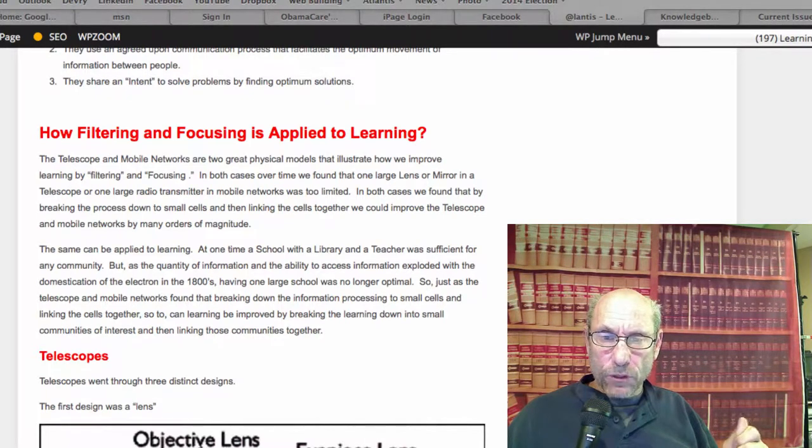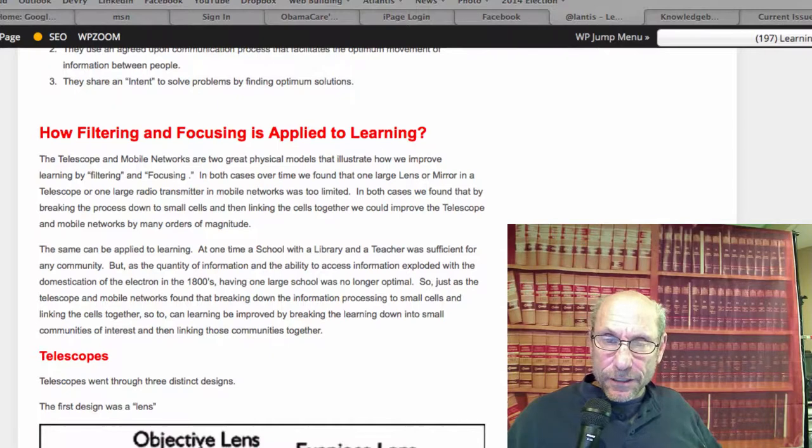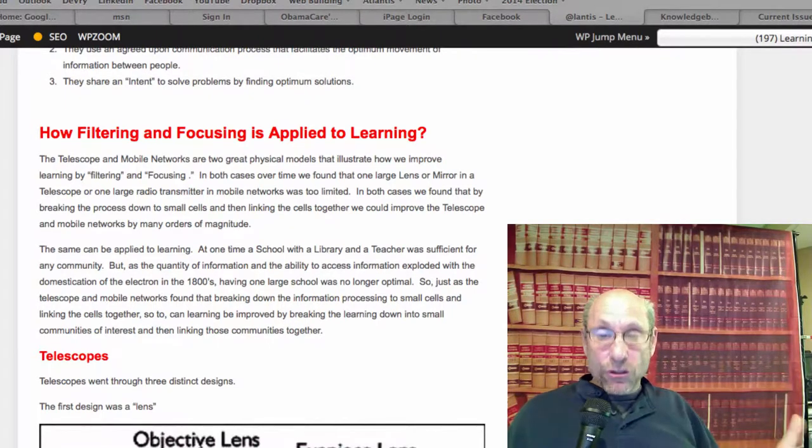In both cases over time, we found that one large lens or mirror in a telescope or one large radio transmitter in mobile networks was too limited. In both cases, we found that by breaking the process down to small cells and then linking the cells together, we can improve the telescope and mobile networks by many orders of magnitude. And that's critical.